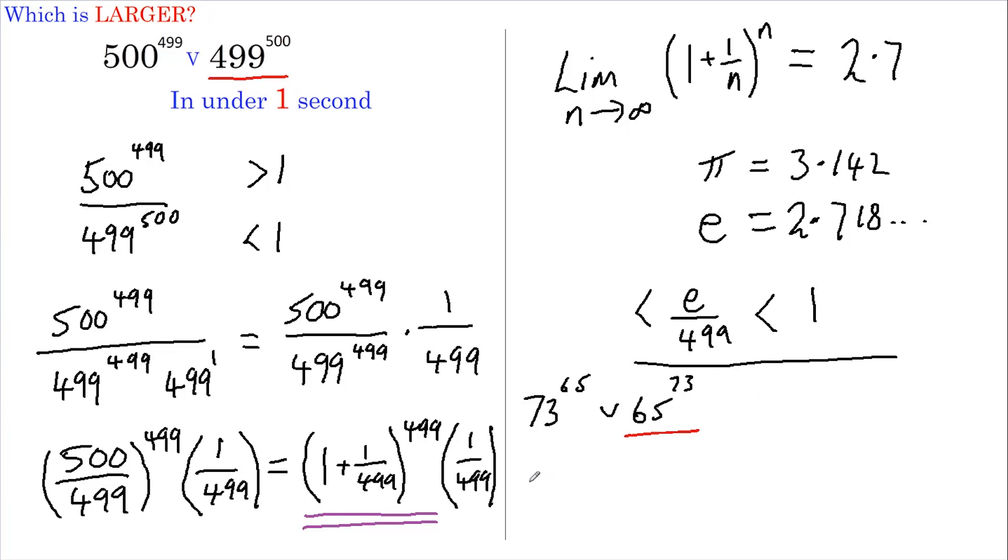What about 21 to the 23 versus 23 to the 21? Both powers are larger than e, this is a larger power, this is the one.